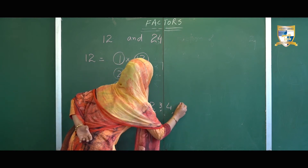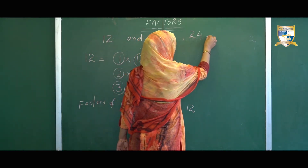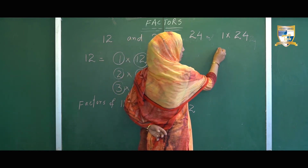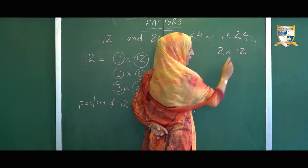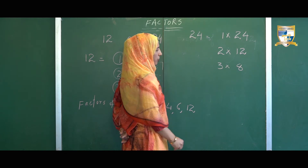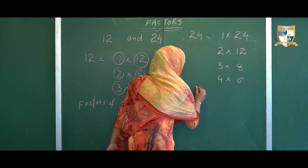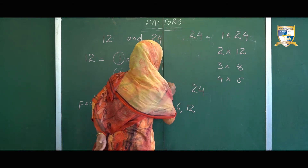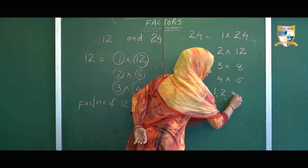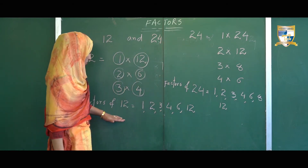Now I'll find all the factors of number 24. 24 can be written as 1 multiplied by 24 — both these numbers are factors of 24. Two 12s are 24, this is another possible combination. Three 8s are 24, third possible combination. Four 6s are 24. So individually all these numbers are the factors of 24: 1, 2, 3, 4, 6, 8, 12, and 24.